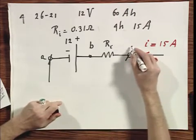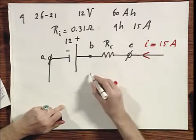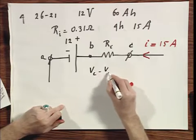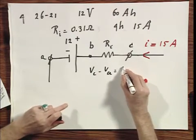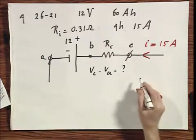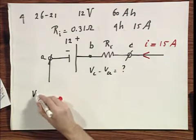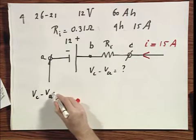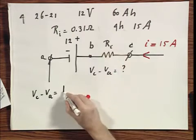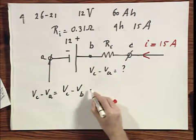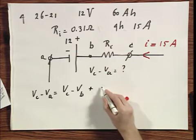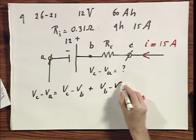And the question now is, what is Vc, if I call this point C, minus Va? So while I'm charging, what is this potential difference? Well, Vc minus Va is Vc minus Vb plus Vb minus Va.